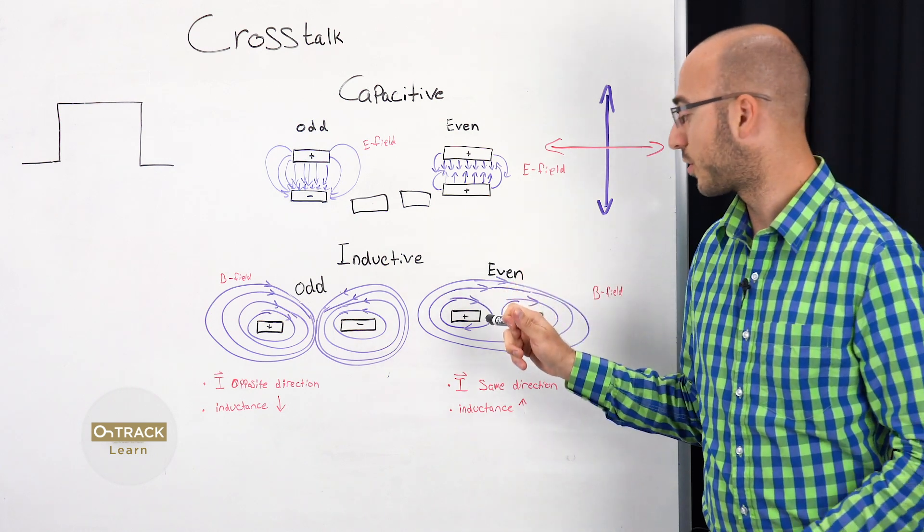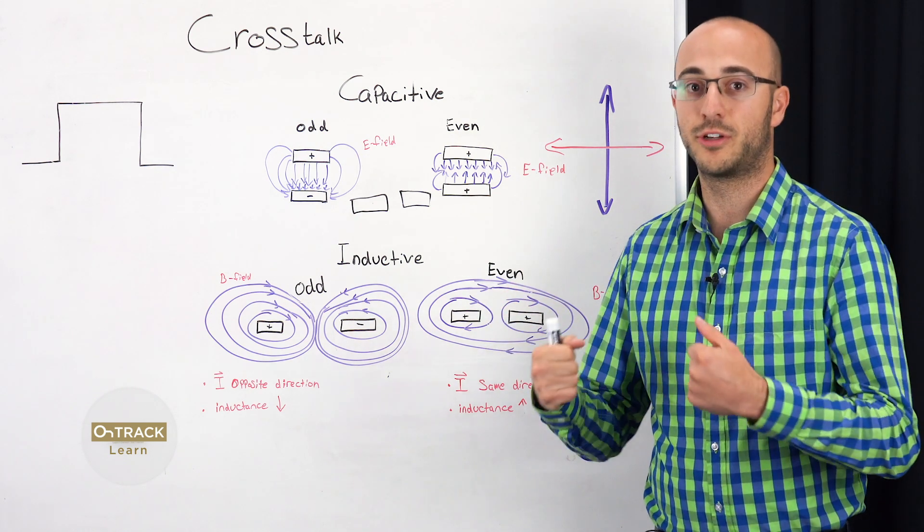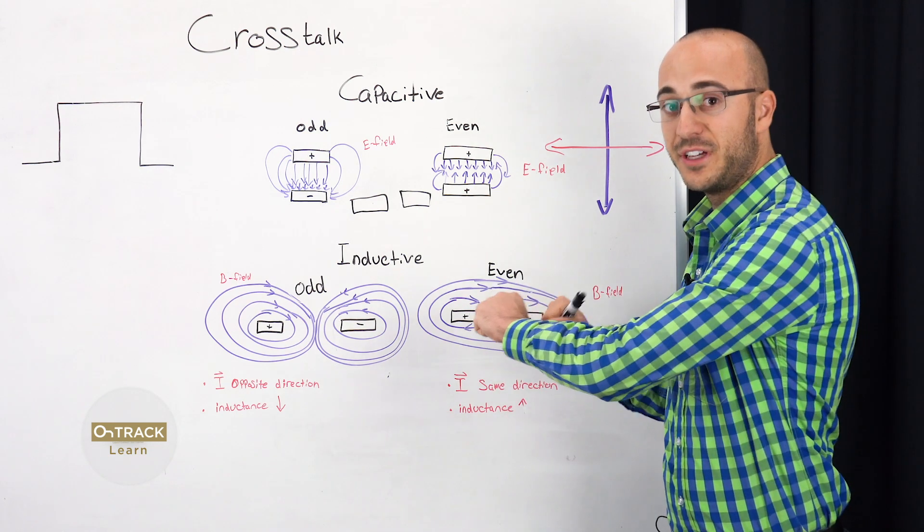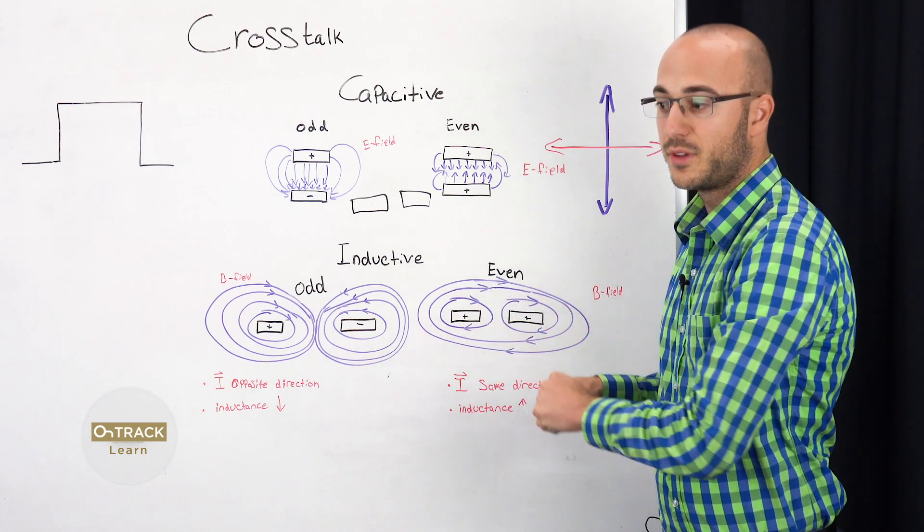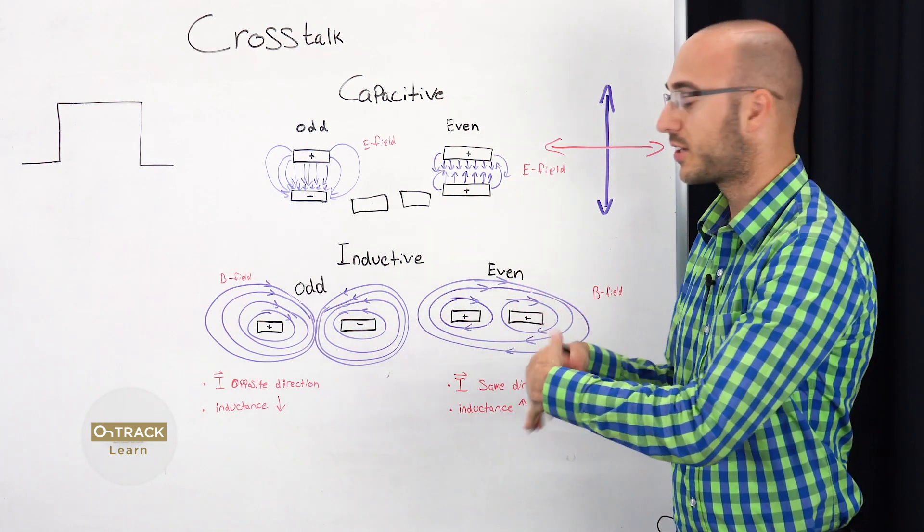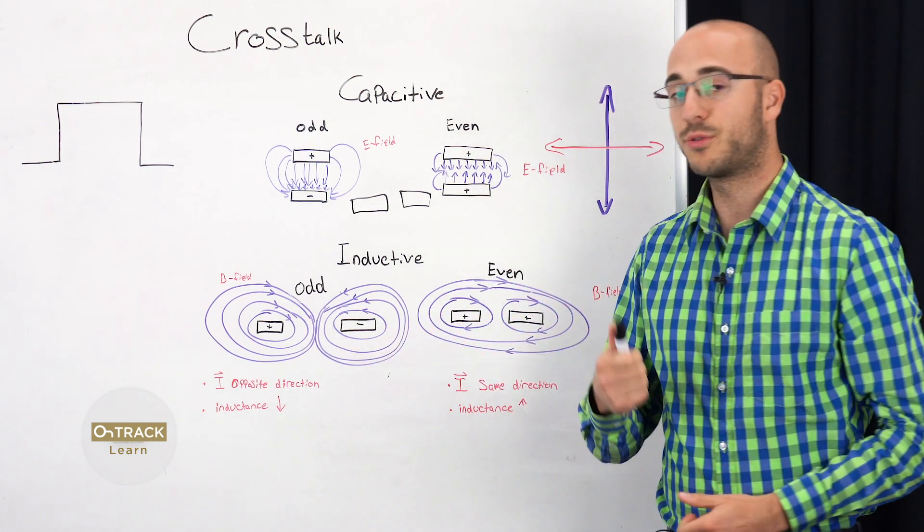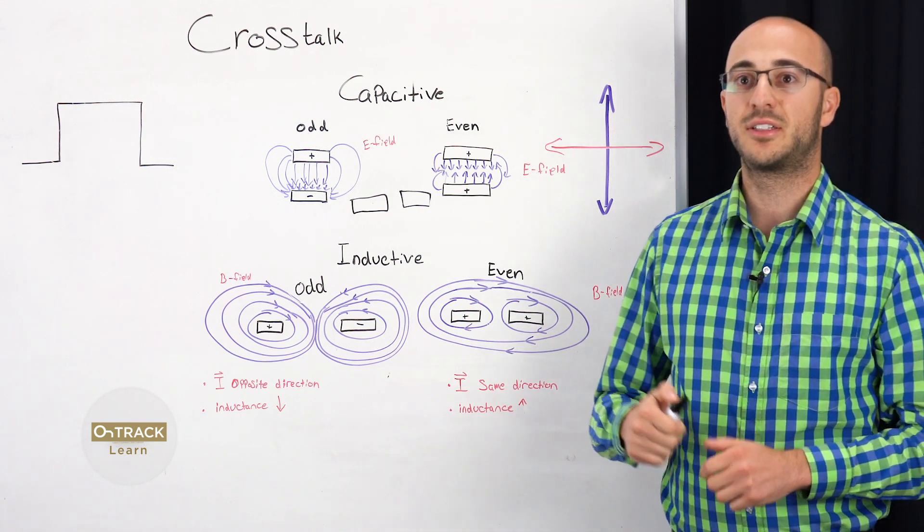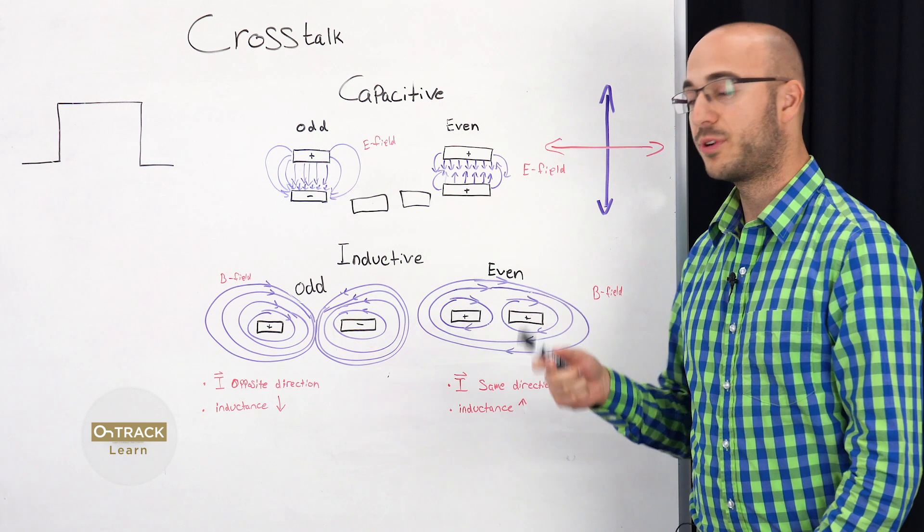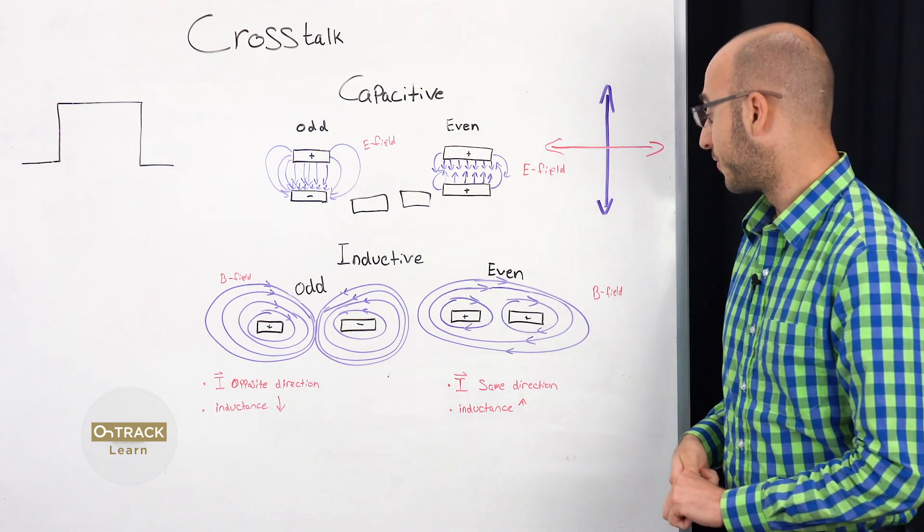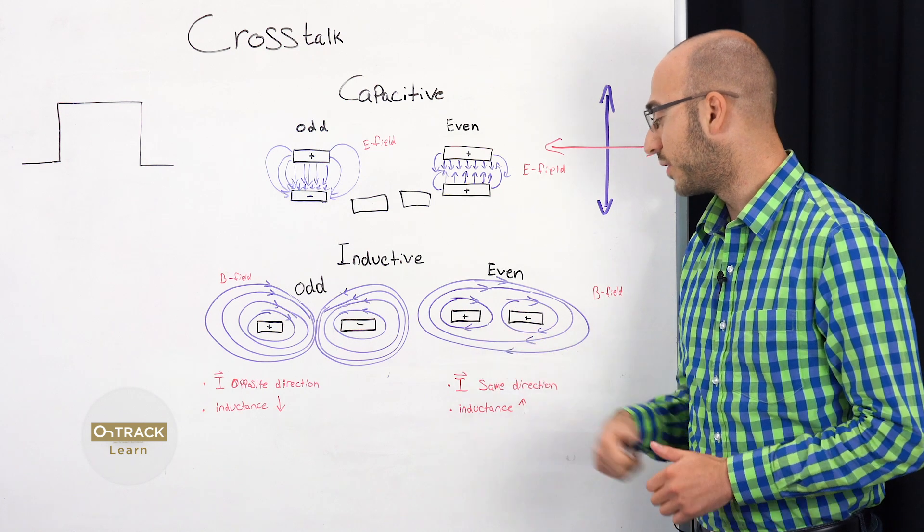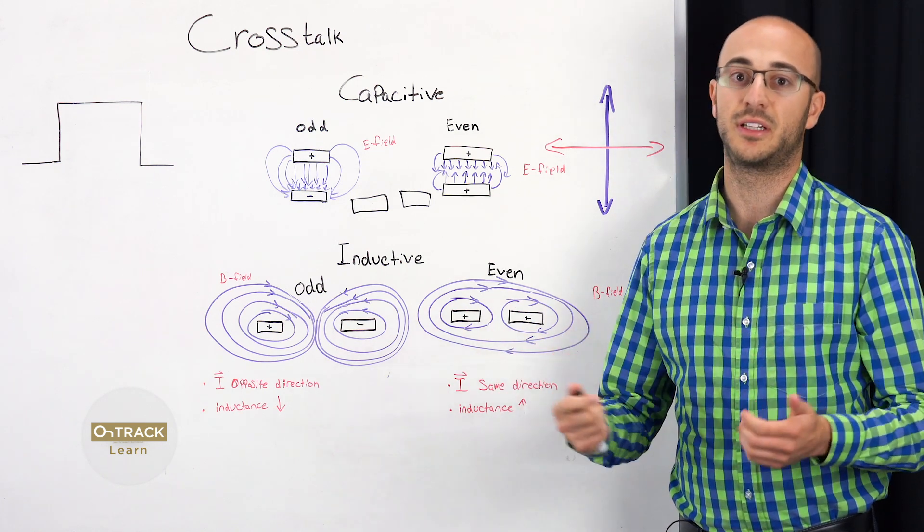Another solution for inductive crosstalk is to separate your traces. And the reason being is, if you can get these fields farther apart, where they're not interacting, you don't have to worry about crosstalk, because the fields aren't interacting. So separate those out. And the rule of thumb for that is to have the gap between the traces be three times the width of the trace. So for instance, if this trace is two mils, you'd want the gap between them, edge to edge, be six mils.